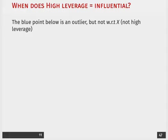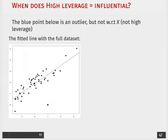The real question is when does having high leverage, being an outlier, actually mean that this observation is going to be influential on our estimated regression? Here's another example. The blue point is an outlier, but it's not necessarily an outlier with regard to X. It doesn't have high leverage.